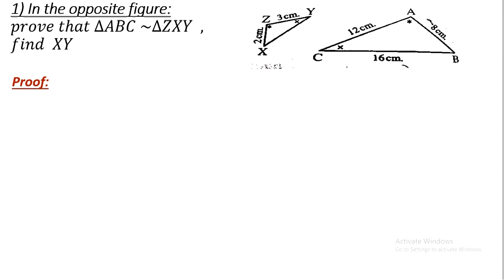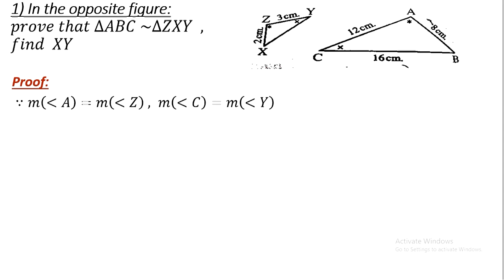The first example: in the opposite figure we have two triangles. We need to prove that triangle ABC is similar to triangle XYZ. From the given data: measure of angle A equals measure of angle Z, and measure of angle C equals measure of angle Y. Also AB = 8 cm, BC = 16 cm, AC = 12 cm, ZY = 3 cm, and ZX = 2 cm. Since measure of angle A equals measure of angle Z and measure of angle C equals measure of angle Y, therefore triangle ABC is similar to triangle ZXY.